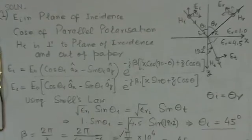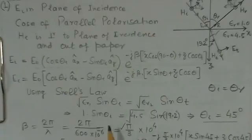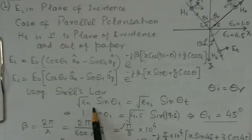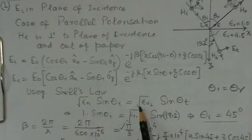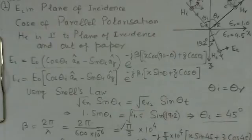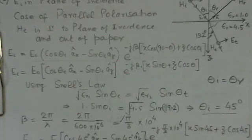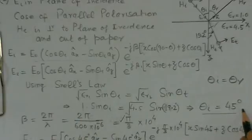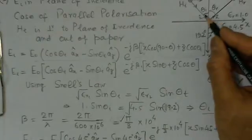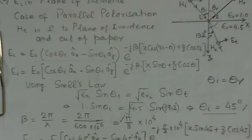And now we use Snell's Law, that means √ε_r1 sin θ_i = √ε_r2 sin θ_t. We know the value for ε_r1, ε_r2. Substitute 1, this 4.5, you get the value of θ_i to be 45 degrees. That means this θ_i, the angle of incidence is 45 degrees.